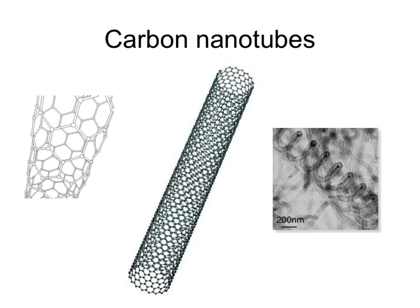Carbon nanotubes are like individual sheets of graphite which have been rolled up into a tube. Tubes are one of the strongest structures, and because the bonds within those hexagons are very strong covalent bonds, we have a very strong tube in both directions - end to end and across the tube. Because nanotubes have the same structure as graphite and each carbon atom makes only three bonds, that leaves one electron per carbon atom unused, allowing the structure to conduct electricity in the same way that graphite does.